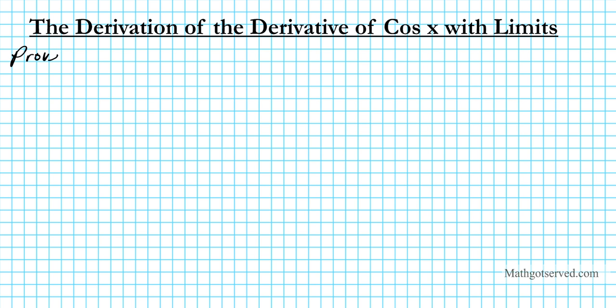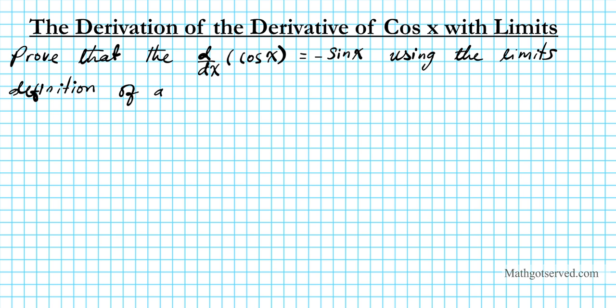Prove that the derivative d/dx of cosine x equals negative sine x given the limits definition of a derivative.